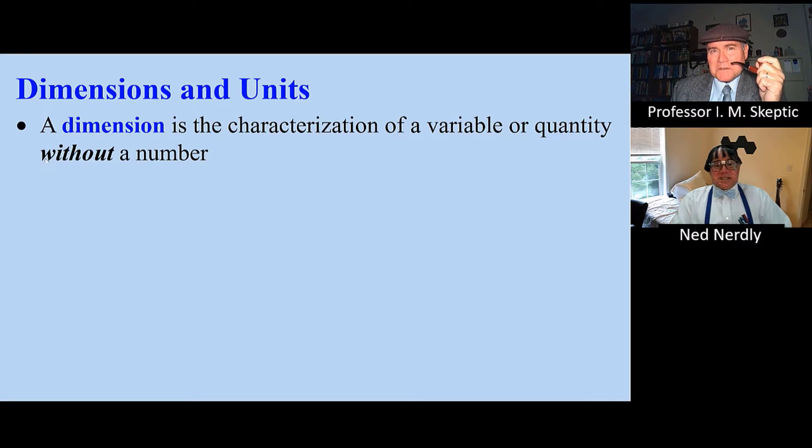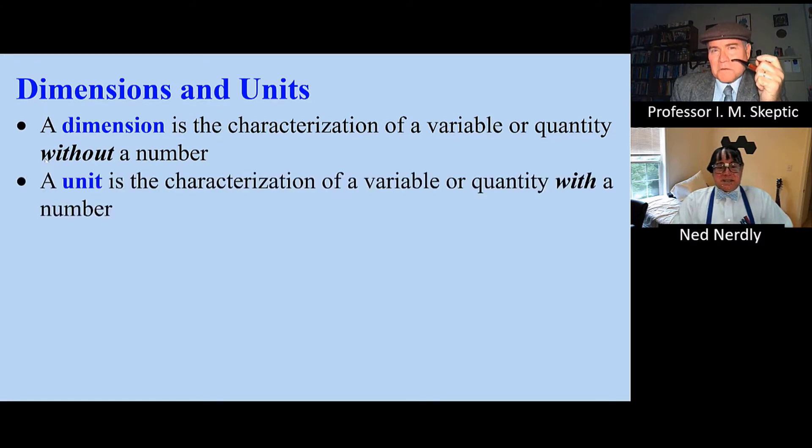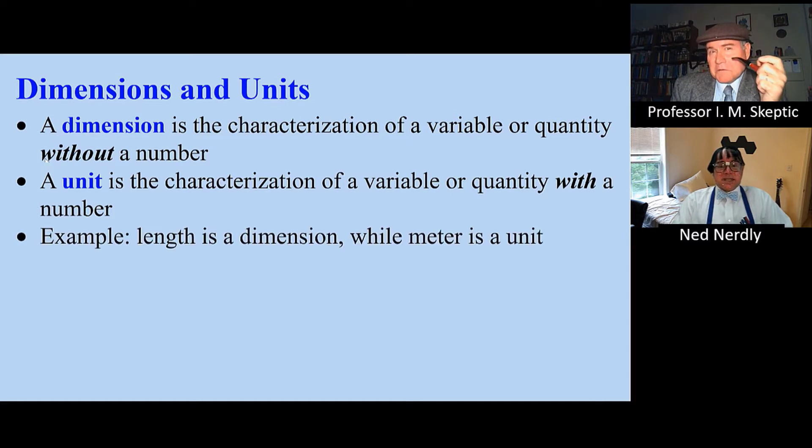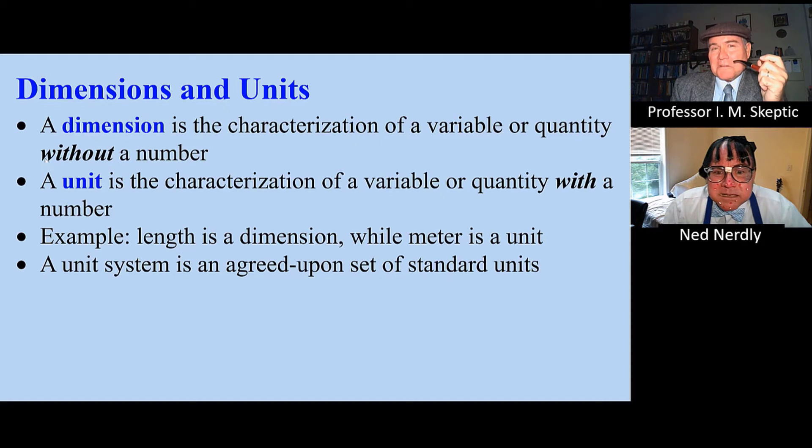A dimension is the characterization of a variable or quantity without a number. A unit is a way of adding a number to that variable. For example, length is a dimension, but meter is a unit. The unit system is an agreed-upon set of standard units.